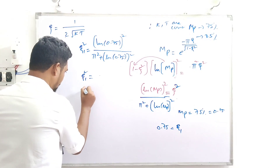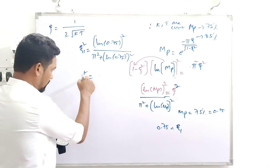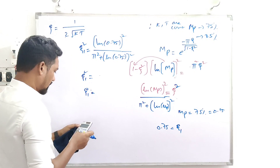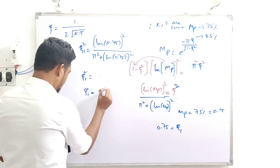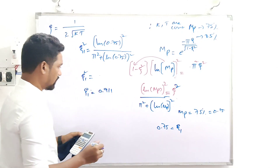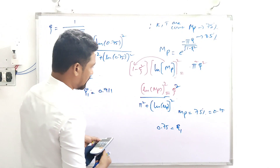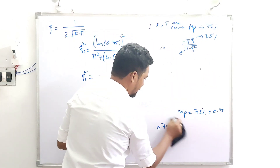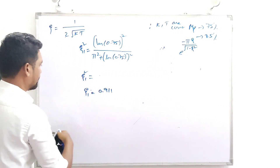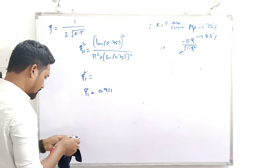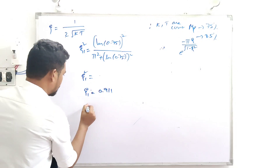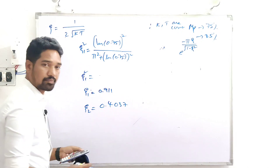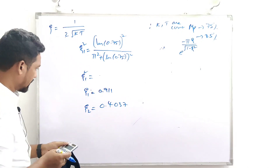Calculating ζ₁ for Mp = 75%: ζ₁² ≈ 8.31 × 10⁻³, so ζ₁ ≈ 0.091. For Mp = 25%, ζ₂ ≈ 0.4037. Check these on a calculator.